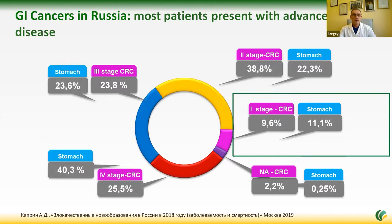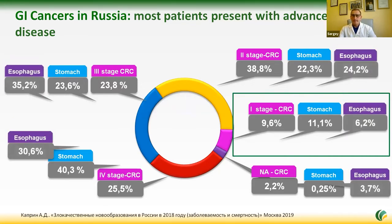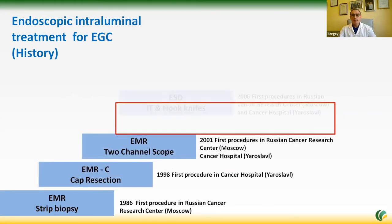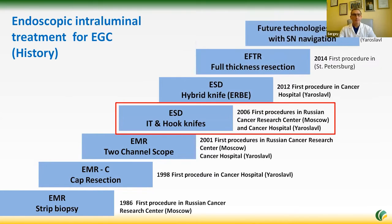Unfortunately, most cancers are detected too late for successful treatment. For example, only 11% of gastric cancers are detected at an early stage. In my Yaroslav region, the situation is a little bit better — around 20% of cases are detected at an early stage, due to special regional endoscopy training programs together with Japanese experts, and good endoscopy facilities in our regional hospitals. From the historical point of view, the first ESD procedure in Russia was performed in 2006 in Yaroslavl and in Moscow, after our first training course in Tokyo and the official registration of the first Olympus IT knife in our country.